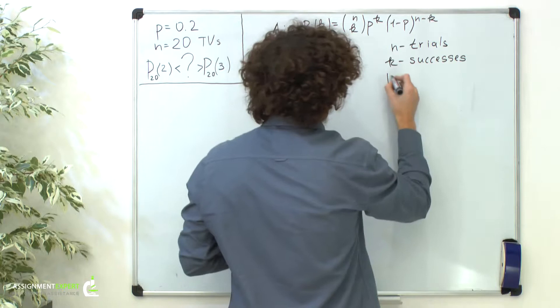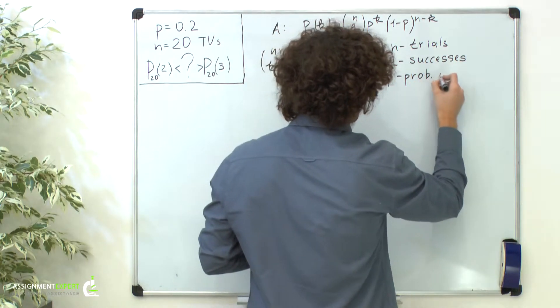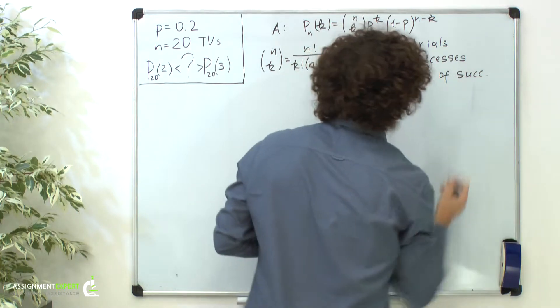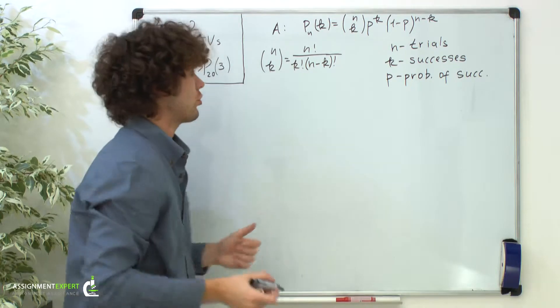p is the probability of success in one trial. 1 minus p is the probability of failure in one trial.